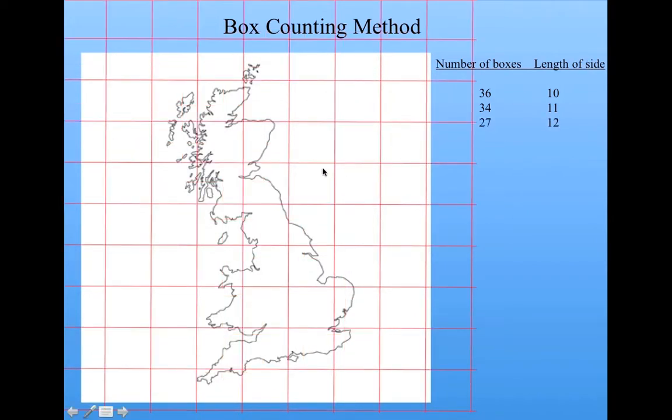Here the size of the box is larger again, 12. And I got 27 boxes that contained part of the figure. So you keep doing this, accumulating this list of numbers.